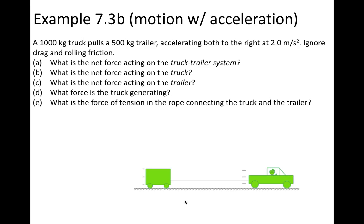In this next example, we have a 1,000 kilogram truck pulling a 500 kilogram trailer, accelerating both to the right at 2 meters per second squared. We're to ignore drag and rolling friction. Before answering the questions, we want to look at the forces and decide whether they are internal or external to our system. For the truck and trailer system, the weight force acting down is external because it's exerted by the earth. The normal force on the truck is external because it's exerted by the ground. The applied force pushing the truck forward is external — the ground is what's pushing the truck forward.